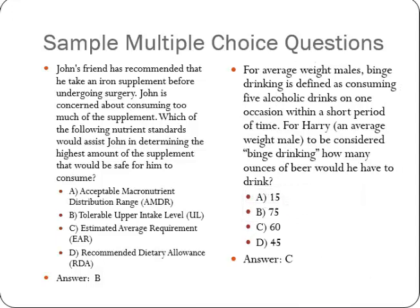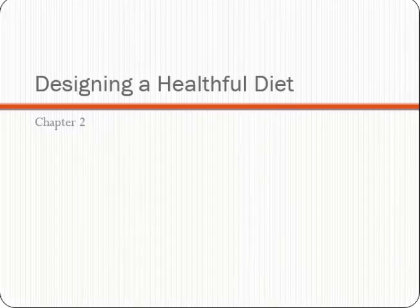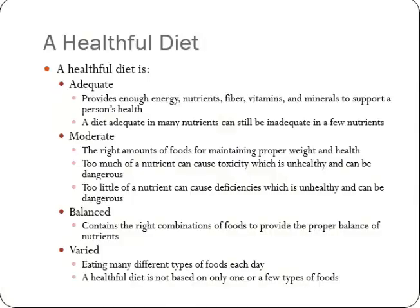60 ounces is a lot of beer, so binge drinking is a lot easier if you're drinking hard liquor or even wine than if you're drinking beer. Chapter two is about designing a healthful diet — trying to make sure you get all the nutrients necessary for the materials your body needs.